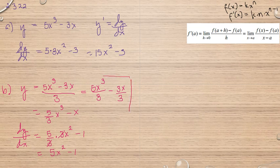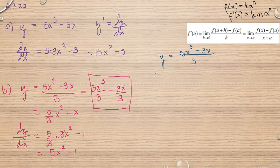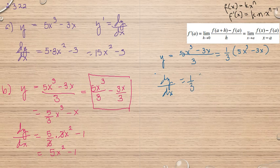Så jag hoppas att ni förstod vad jag gjorde i den här delen. Ja, tror jag att alla hängde med, men kanske det är inte lika självklart i b. Det finns ett annat sätt att göra också för den andra. Så har vi 5x of 1 till 3, så tar jag med 3x, dividar med 3. Vad ni kan göra är sätta isär den här i, eller faktorisera ifrån i. Till exempel 1 tredje del, multiplicar med 5x of 1 till 3, så tar jag med 3x. Det är också okej att göra. När vi gör dx, så har ni den här konstanten, så konstanten är kvar där. Sen ni har 15x of 1 till 2.